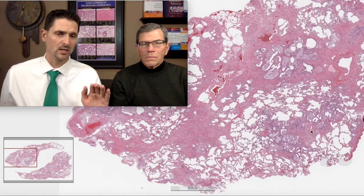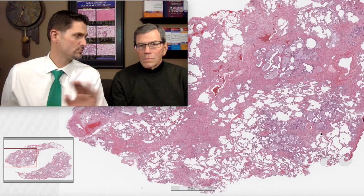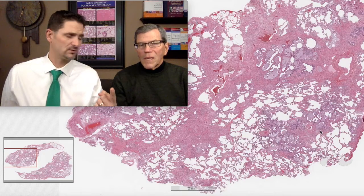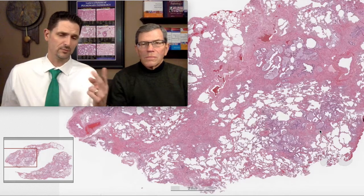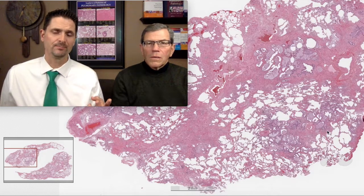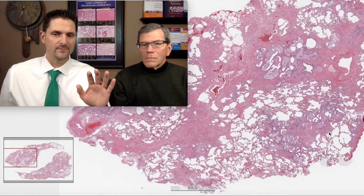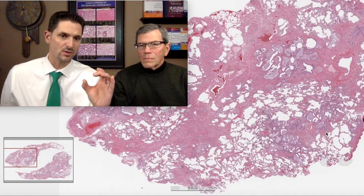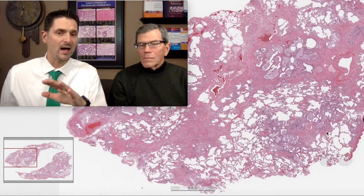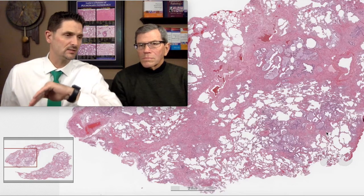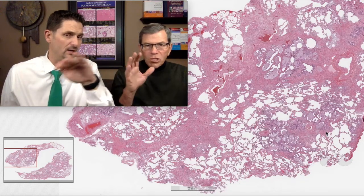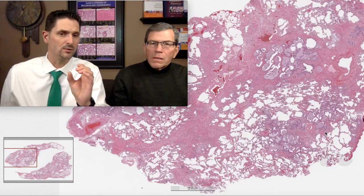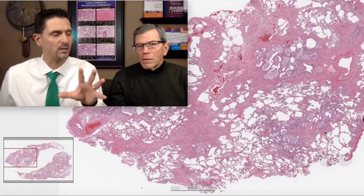I think of UIP and then the other two main patterns of fibrosis: non-specific interstitial pneumonia, which is a more diffuse fibrosing process, and airway-centered fibrosis in the family of chronic hypersensitivity pneumonitis or chronic aspiration — where the fibrosis starts in the center and works its way out to the periphery of the lobule. If UIP is the periphery of the lobule creating a donut of fibrosis, chronic HP is the donut hole starting in the center and working its way out.